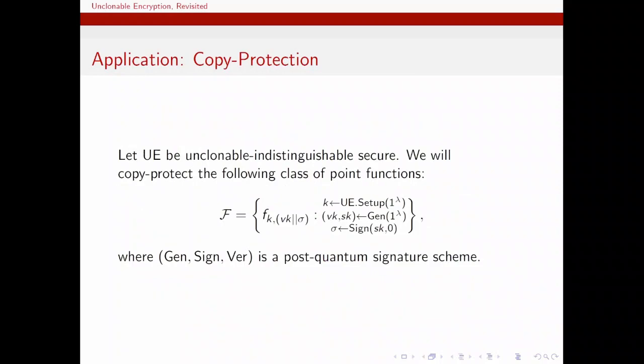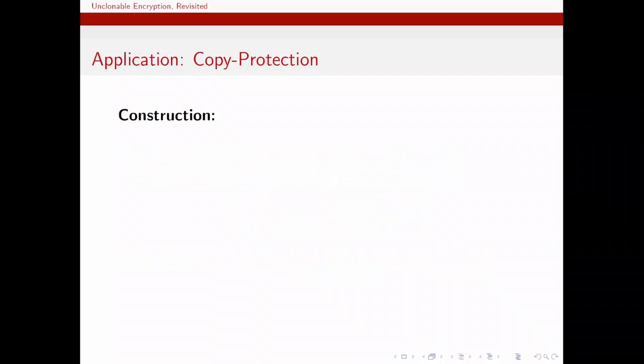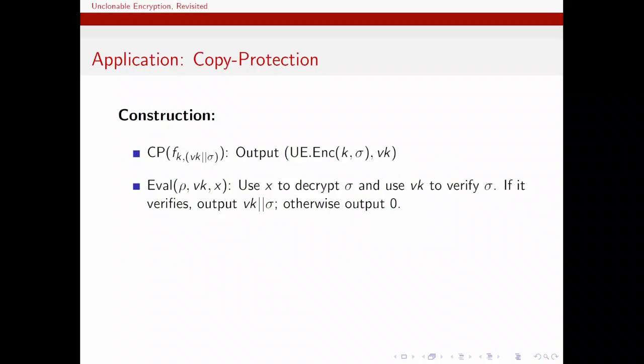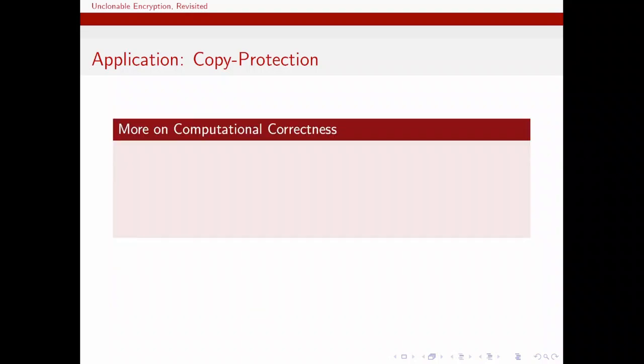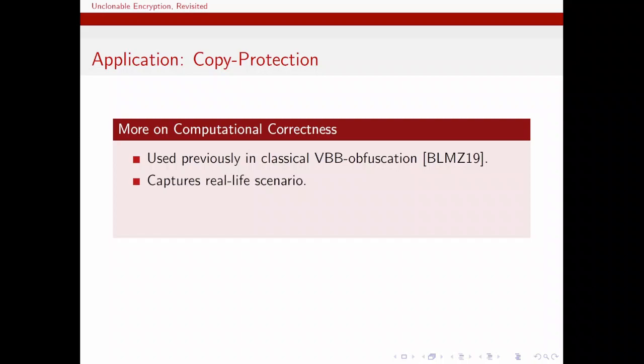We are especially interested in optimal security of unclonability because Broadbent and Lord also showed that it implies unclonable indistinguishability, which we use to construct copy protection. In the final portion of the talk, I will summarize our copy protection construction. Given an unclonable indistinguishable secure scheme, we consider a specific class of point functions, and the distribution over this class depends also on a signature scheme. And the construction itself is very simple. To copy protect, we simply encrypt the signature using the key, which are parameters of the function, and we also give the verification key of the signature in the open.